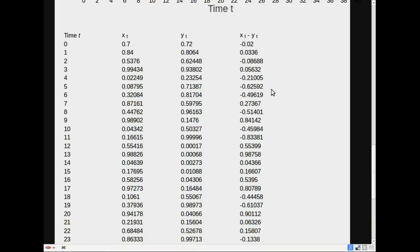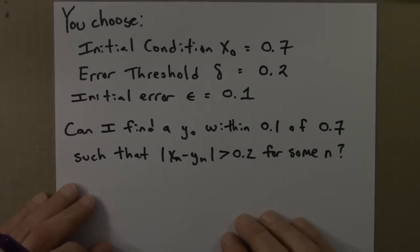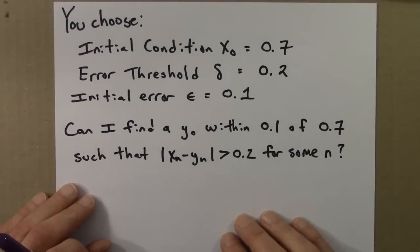Yes, I can find a y₀ within 0.1 of the initial condition 0.7, such that after some amount of iterates, the difference between the two orbits is greater than 0.2. So, the answer to this question is yes.